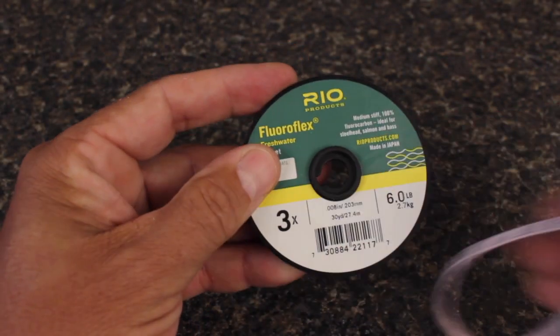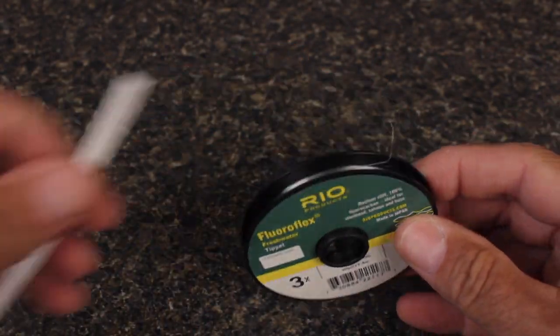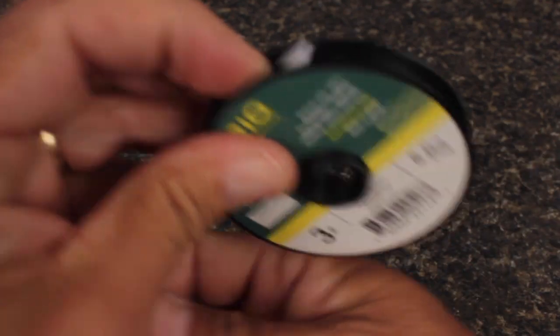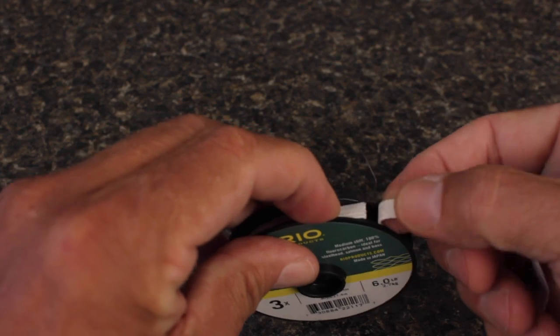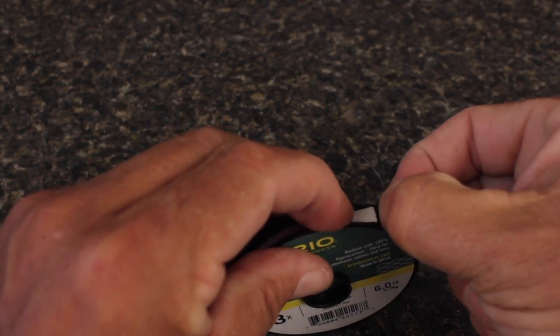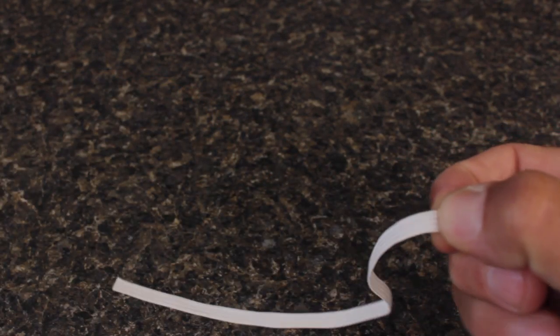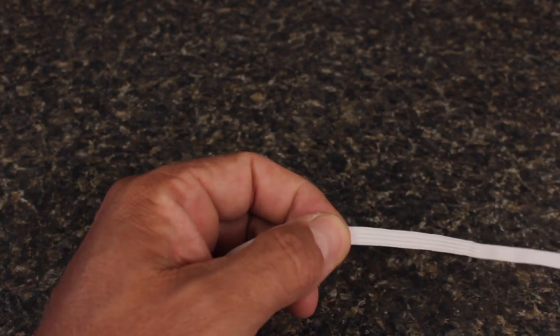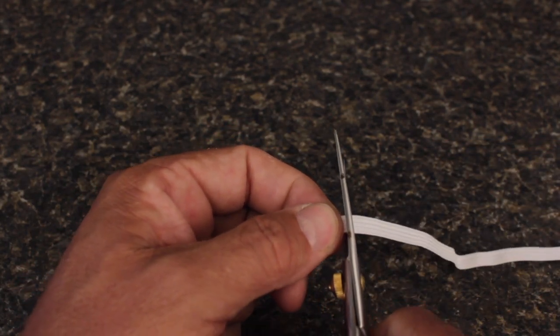To get started, first remove whatever tender came with the spool. Then measure the circumference of the spool with the quarter-inch elastic and pinch that measurement between your fingertips. With good sharp scissors, cut the elastic off square.